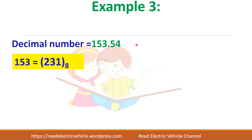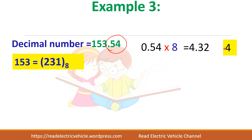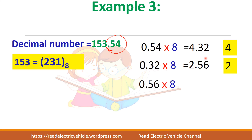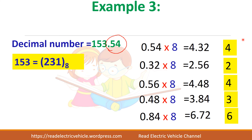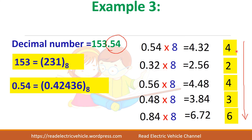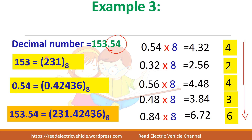Now for the fractional part: 0.54 × 8 = 4.32 — take the integer part 4 and write it separately. Take the fractional part 0.32, multiply by 8 again, and write the integer part outside. Repeat this process about 5 times. The arrow for the fractional part should go from top to bottom. The answer is 0.42436 to base 8. The total answer combining both parts with the decimal point gives the complete equivalent octal number.